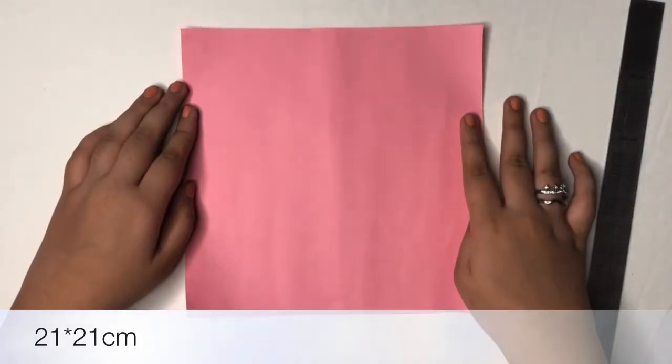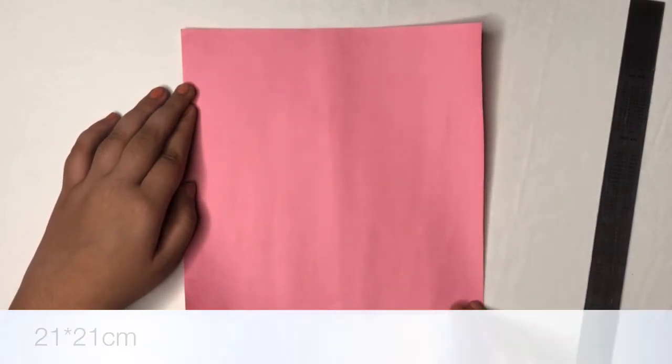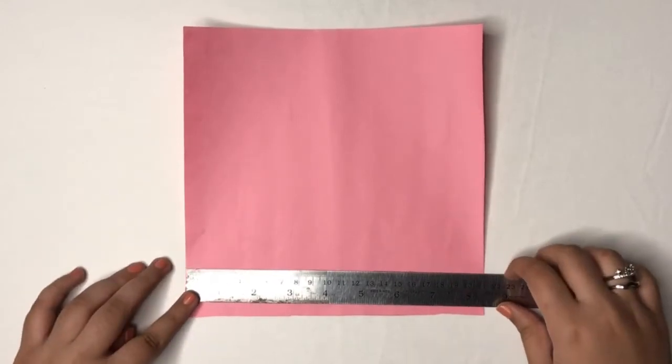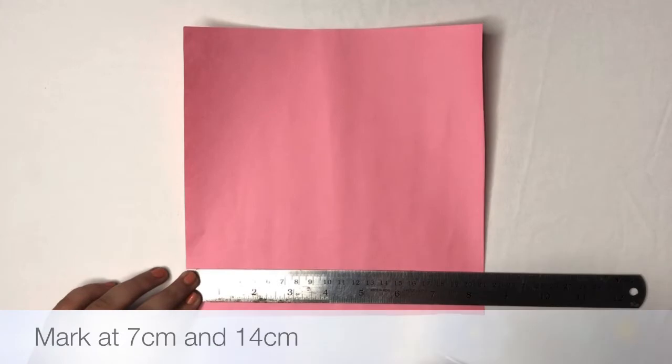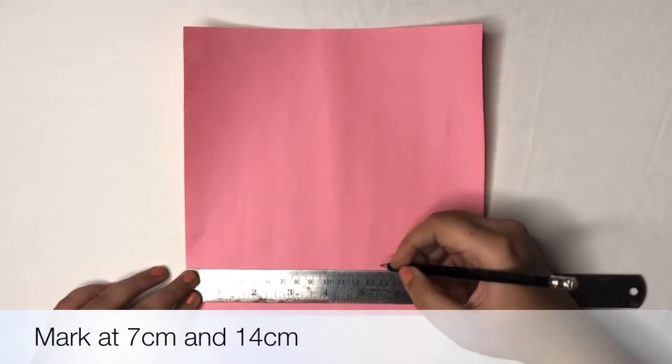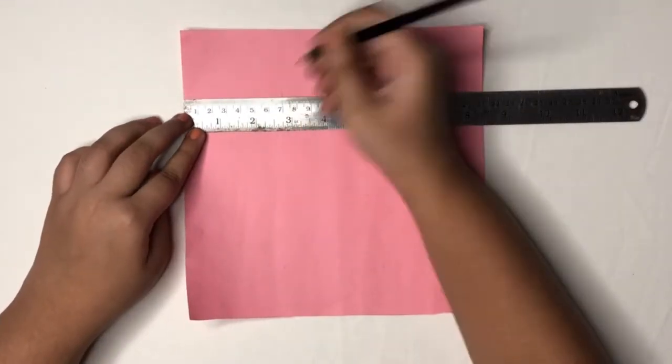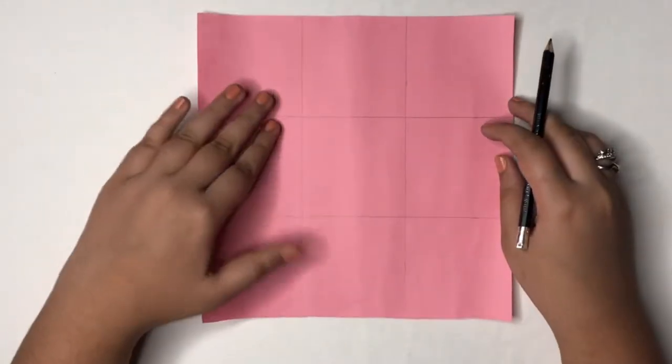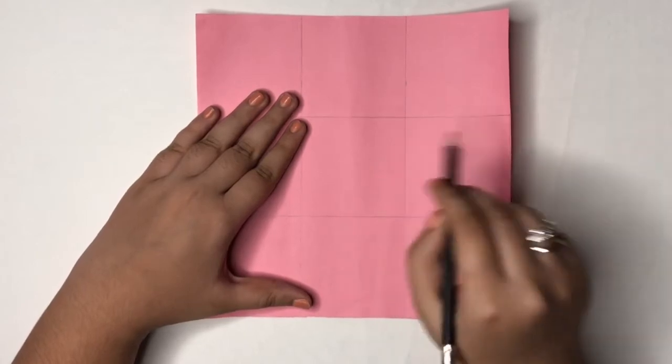We will take this pink piece of paper of size 21 centimeter by 21 centimeter. Now with the measurement of 7 centimeter and 14 centimeter, in the same manner that we did for the black piece of paper, we will do that for the pink.